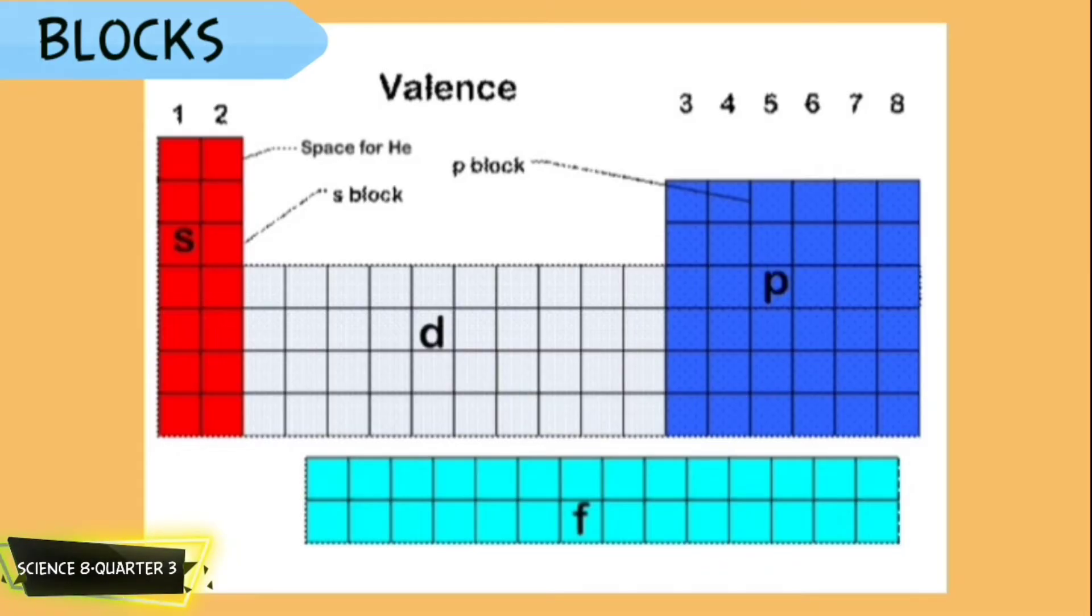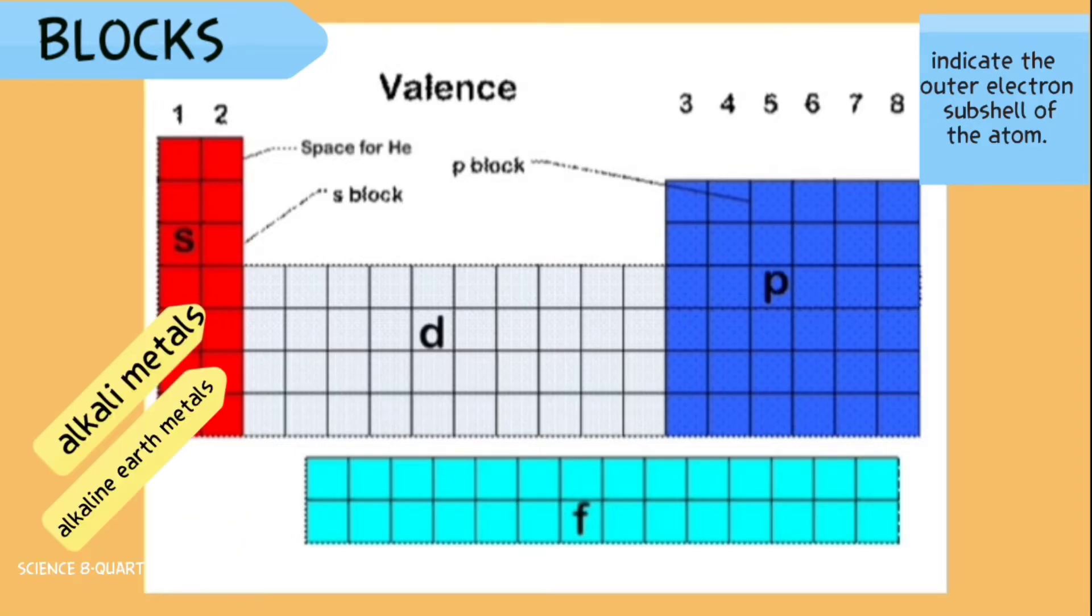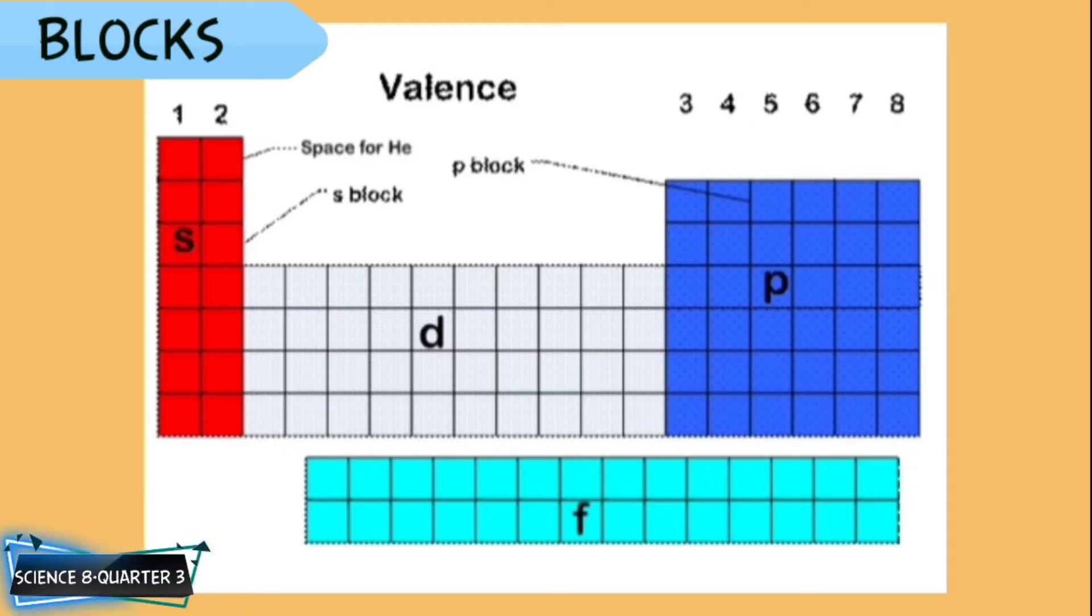Blocks are sections of the periodic table that indicate the outer electron sub-shell of the atom. The S-block includes the first two groups, the alkali metals and the alkaline earth metals, plus hydrogen and helium. The P-block includes groups 13 to 18. The D-block includes groups 3 to 12, which are transition metals. The F-block consists of the two periods below the main body of the periodic table, the lanthanides and actinides.